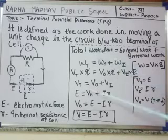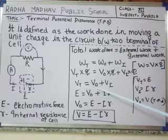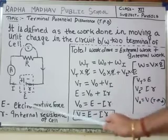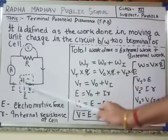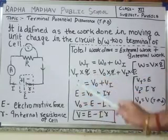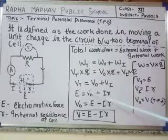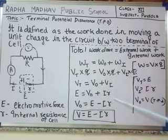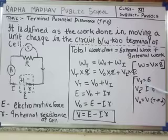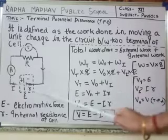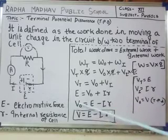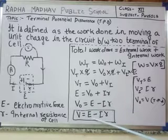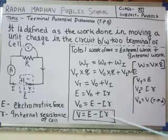Since Q cancels out, we get V_t equals V_O plus V_I. V_t is the EMF — meaning the complete energy delivered by the cell — which equals V_O (TPD) plus IR, where R is the internal resistance of the cell. Therefore, V_O (TPD) equals E minus IR.